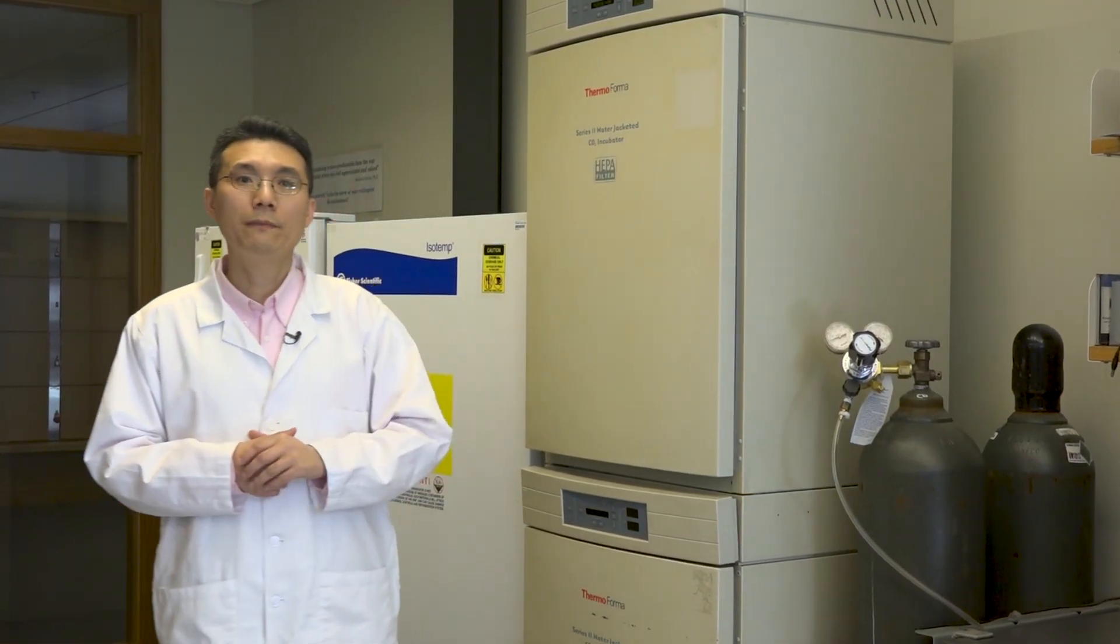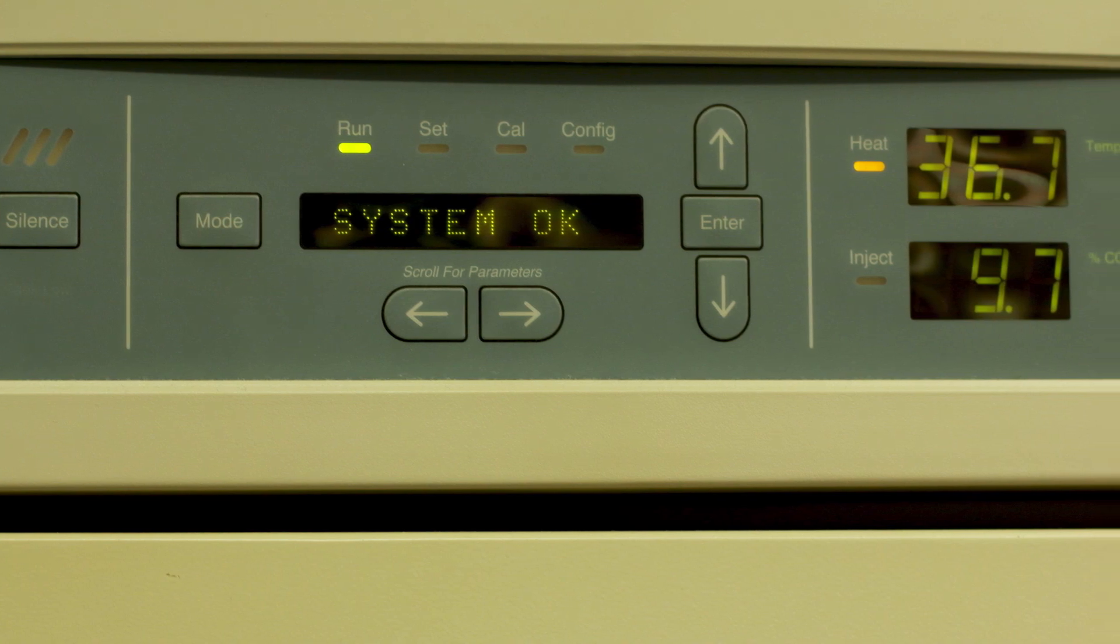We usually grow cells in 37 degree carbon dioxide incubators like this to maintain optimal temperature, moisture, and pH for the cells.